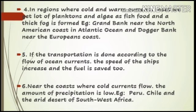Ocean currents are also very helpful for transportation on water, like ships and boats. If transportation is done according to the flow of ocean current, the speed of ships increases and fuel is saved. Near coasts where cold currents flow, the amount of precipitation is low — examples include Peru and the arid desert of southwest Africa.